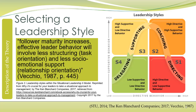As follower maturity increases, effective leadership behavior will involve less structuring or task orientation, and less socio-emotional support or relationship orientation. In this way, the leader observes team members and the workplace and selects whether they need to be more supportive or more directive.